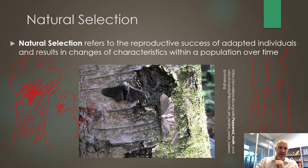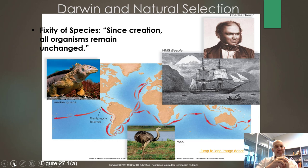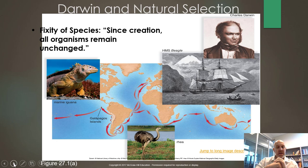Natural selection was something that came about because of Charles Darwin. Darwin hopped on the Beagle back in the 1830s and sailed to South America, specifically to the Galapagos Islands. There he saw lots of different creatures and could see that these creatures had changed over time.